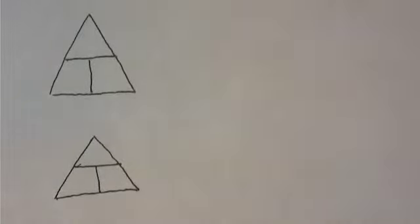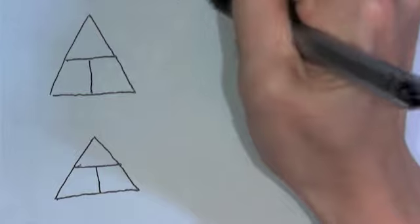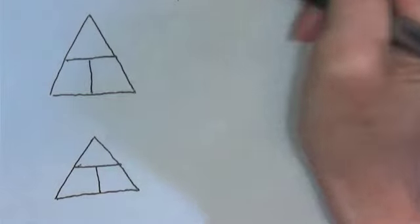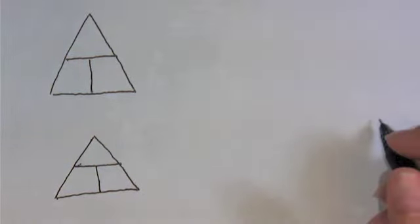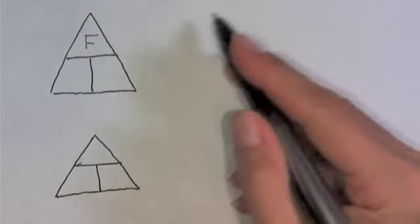A couple of examples are Newton's second law, F equals MA. And if we take that equation, what we do is we take the variable by itself on one side, and we put it in this top triangle, and then we put the M times the A in the bottom.